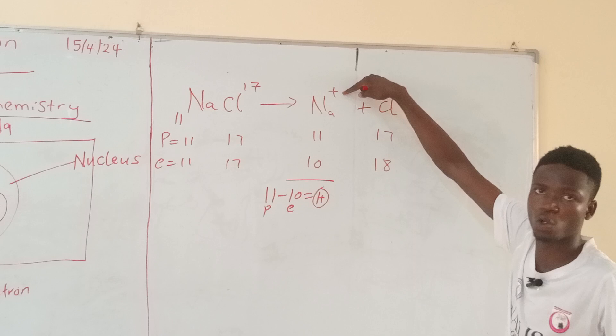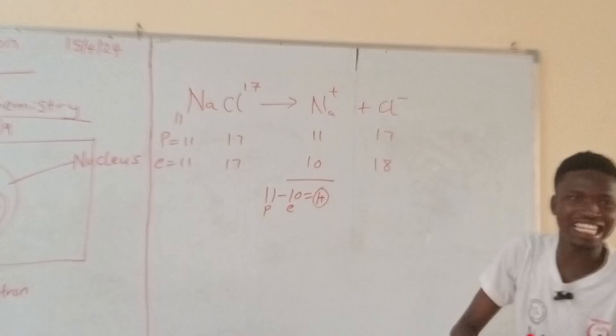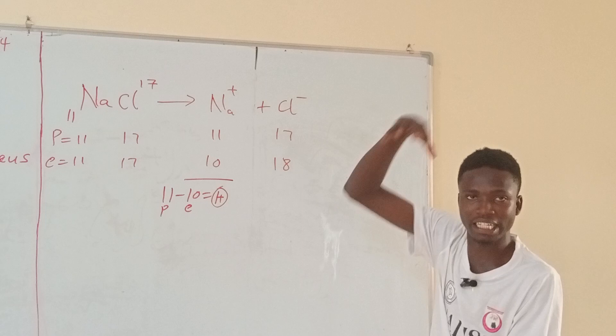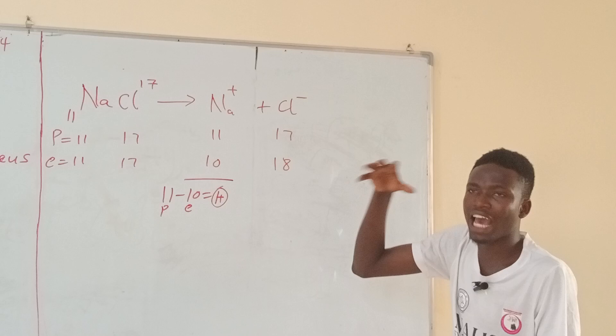So that one will now be plus one, and that plus one is what is showing on sodium. So whenever a species shows positive charge, it means there are more protons in the atom than electrons, due to loss of electron. So nothing happens to the proton, strictly speaking. The only thing that changes is either electron decreases or electron increases. If electron decreases, the proton will dominate. If electron increases, then they will surpass the proton.